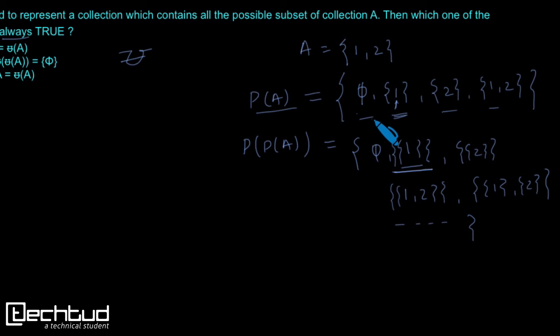Now we can clearly see that these two things are not same. These and these two things are not same and there is nothing common in between two except this phi. So if we find out the intersection of P(A) and P(P(A)), it will be equal to phi. So B option is correct.